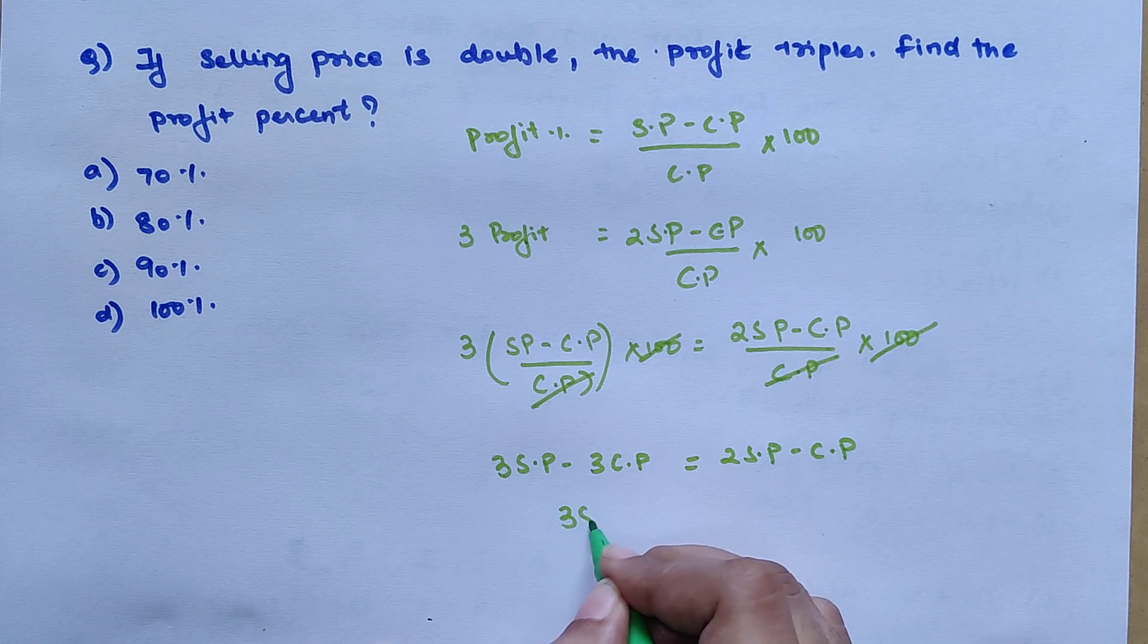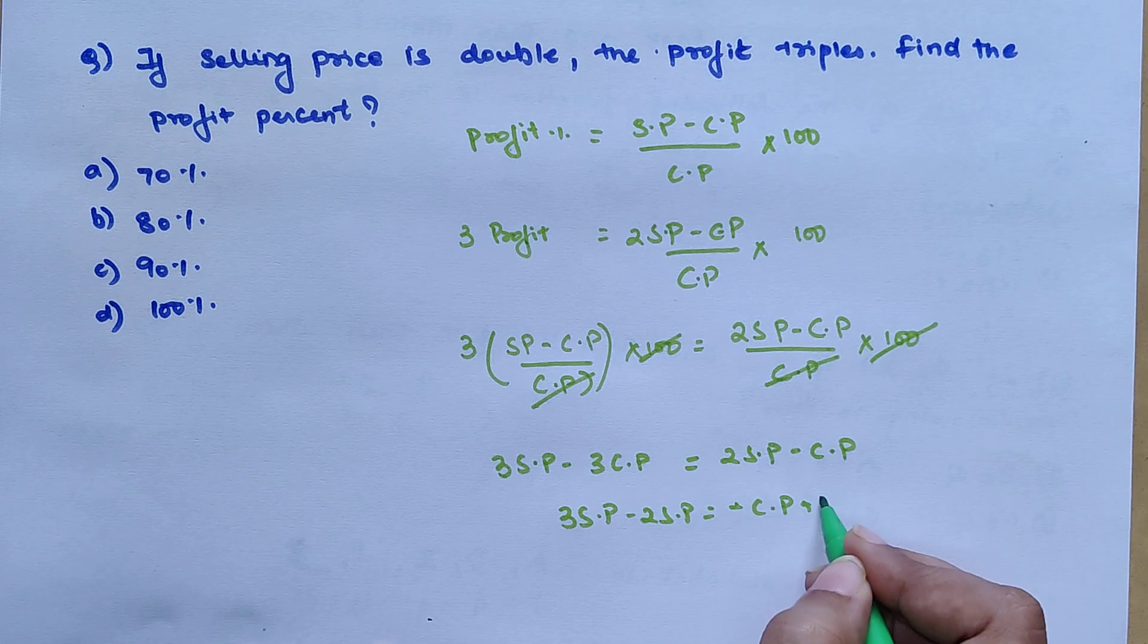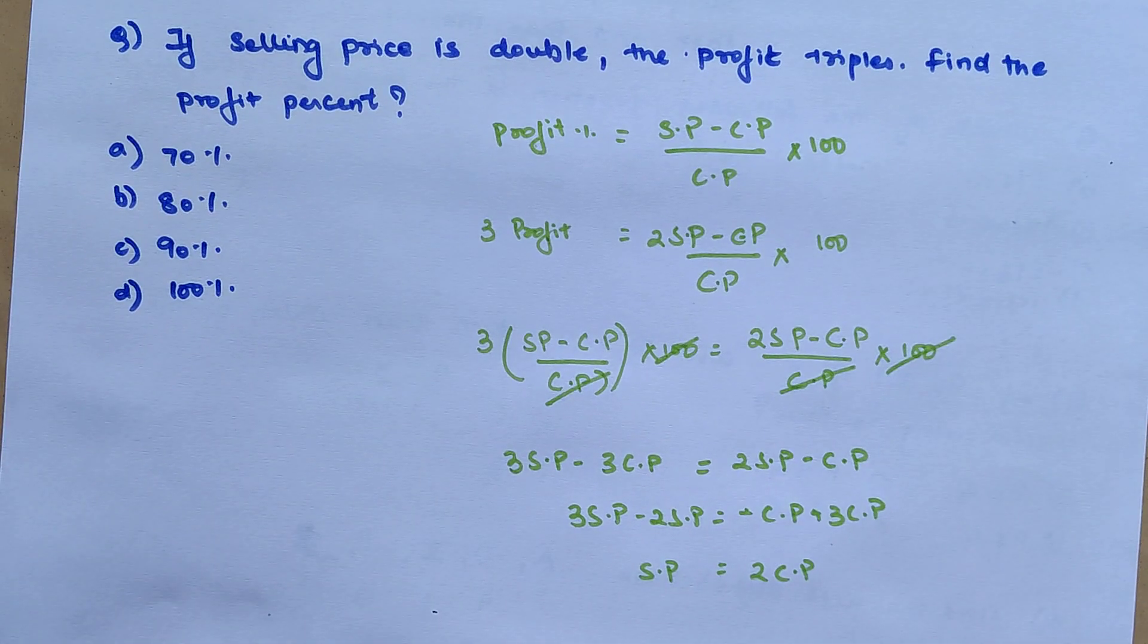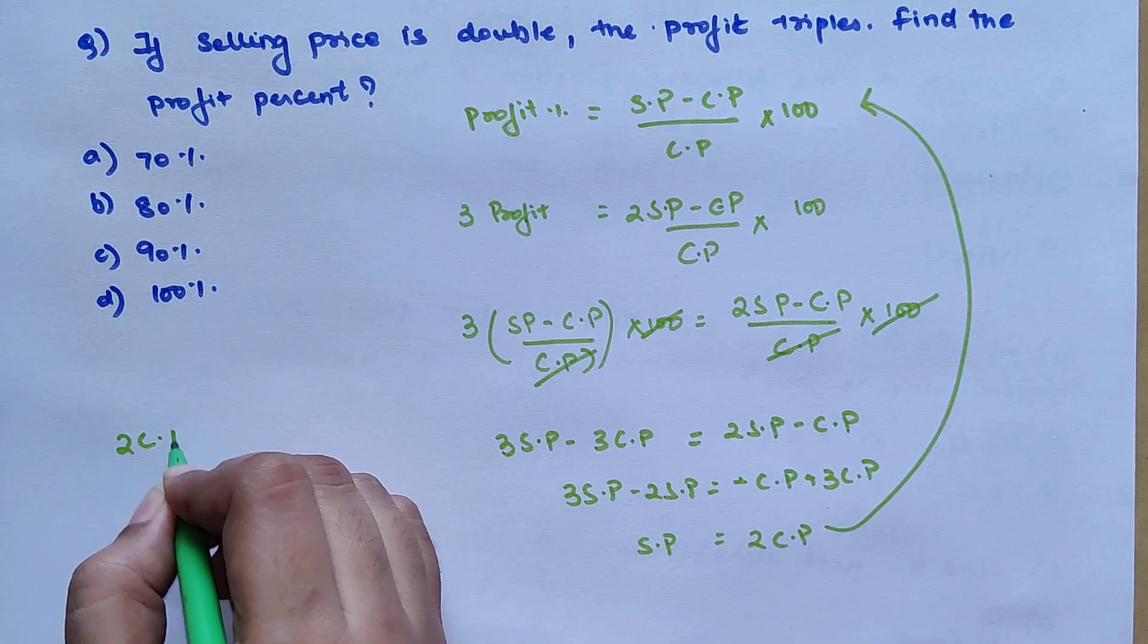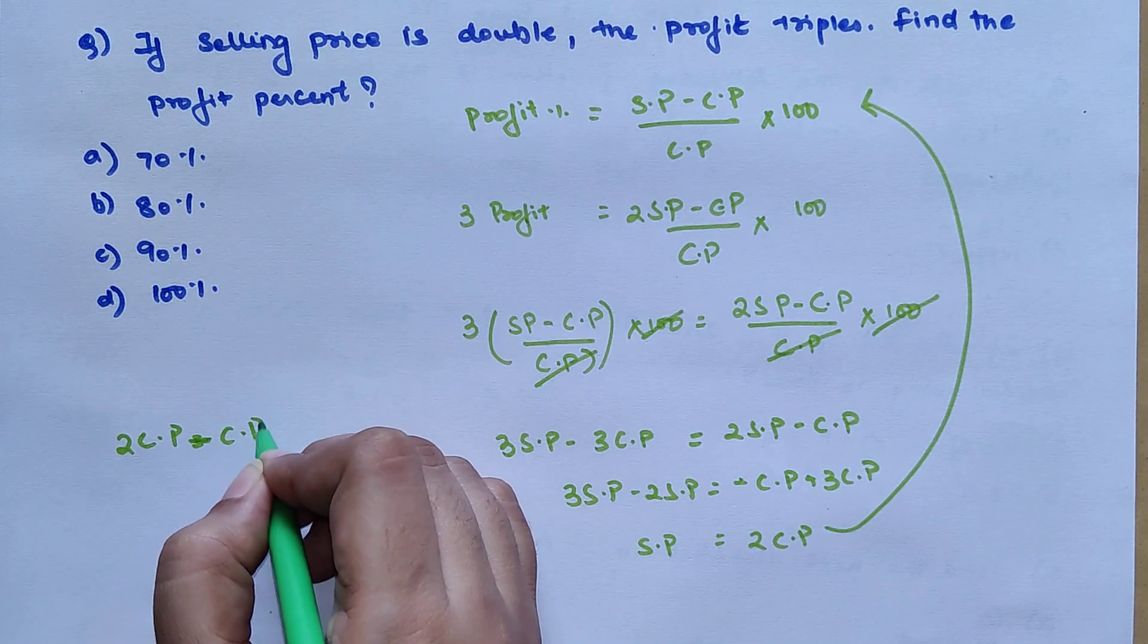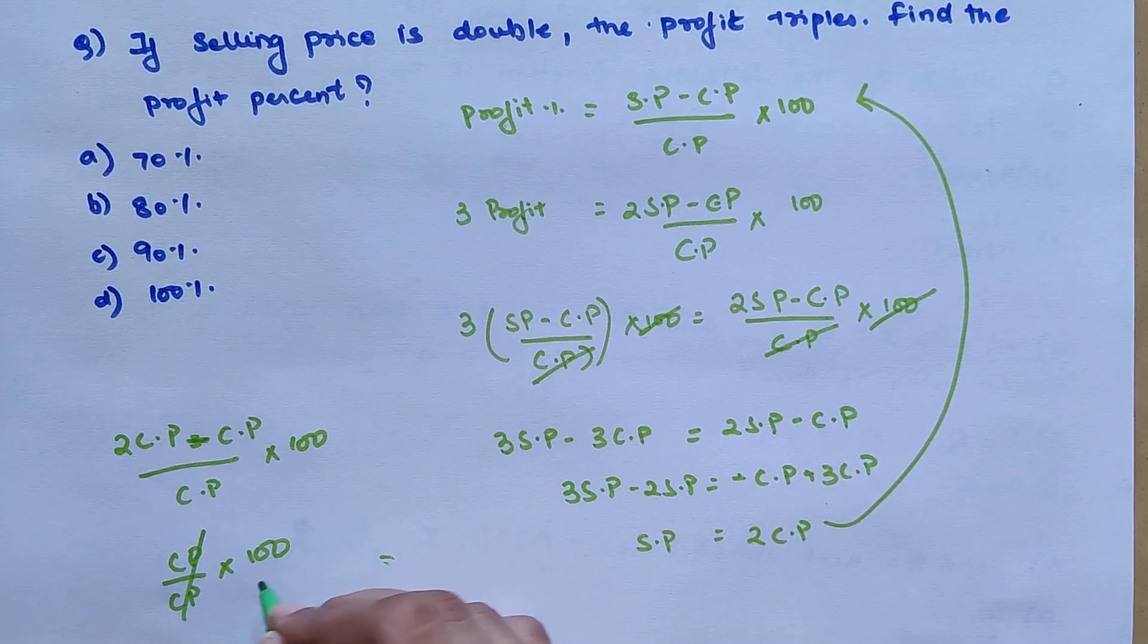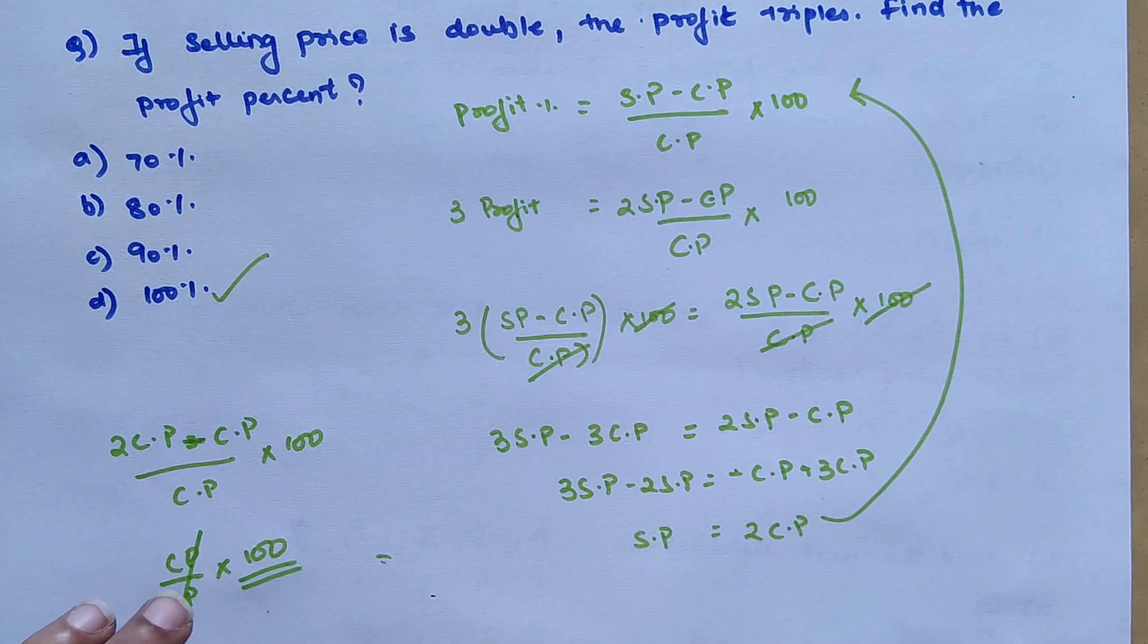Let's shift it on this side, so 3 SP minus 2 SP is equal to minus CP plus 3 CP. This will now become SP is equal to 2 times CP. Substitute that in your original formula of profit percentage, so we have 2 CP minus CP upon CP into 100. This will cancel, so your entire profit percentage is 100. So option D is your correct option.